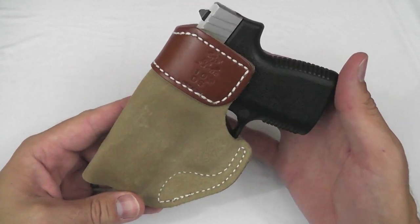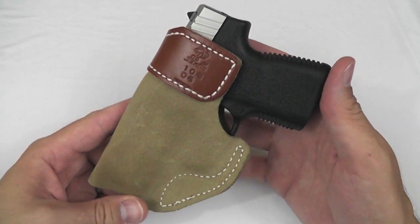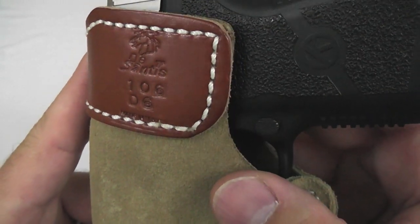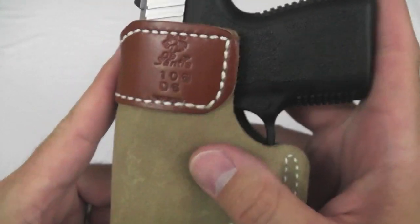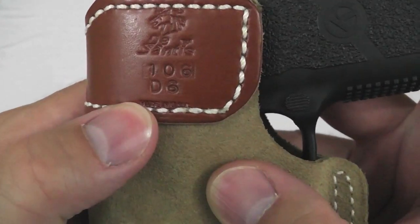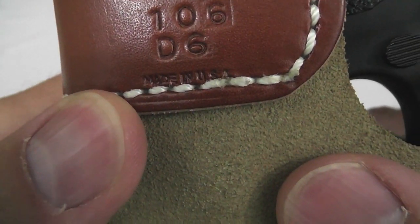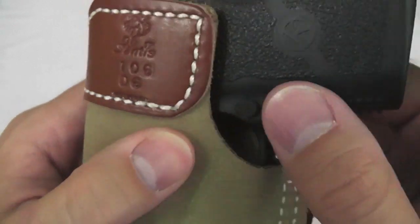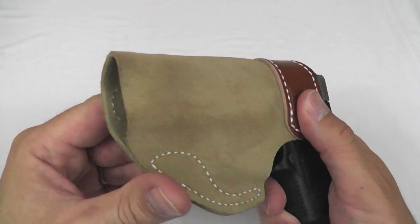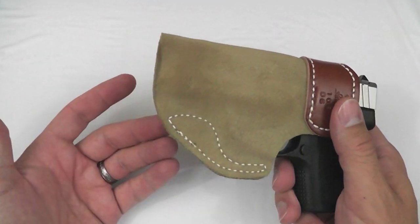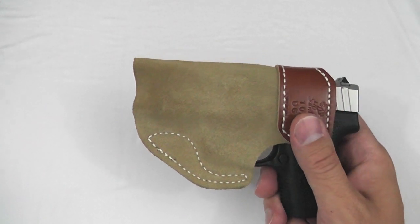Hey, my friends. LateBoyScout here. Thanks so much for tuning in to my review of this DeSantis SOF Tuck Holster, or SOF Tuck, however you want to say it. 106D6 is the number on it. Made in USA! Hey, all right! Let's cheer for a little bit. Yeah, that's cool. I like that. I'll take something made in the USA anytime I can.